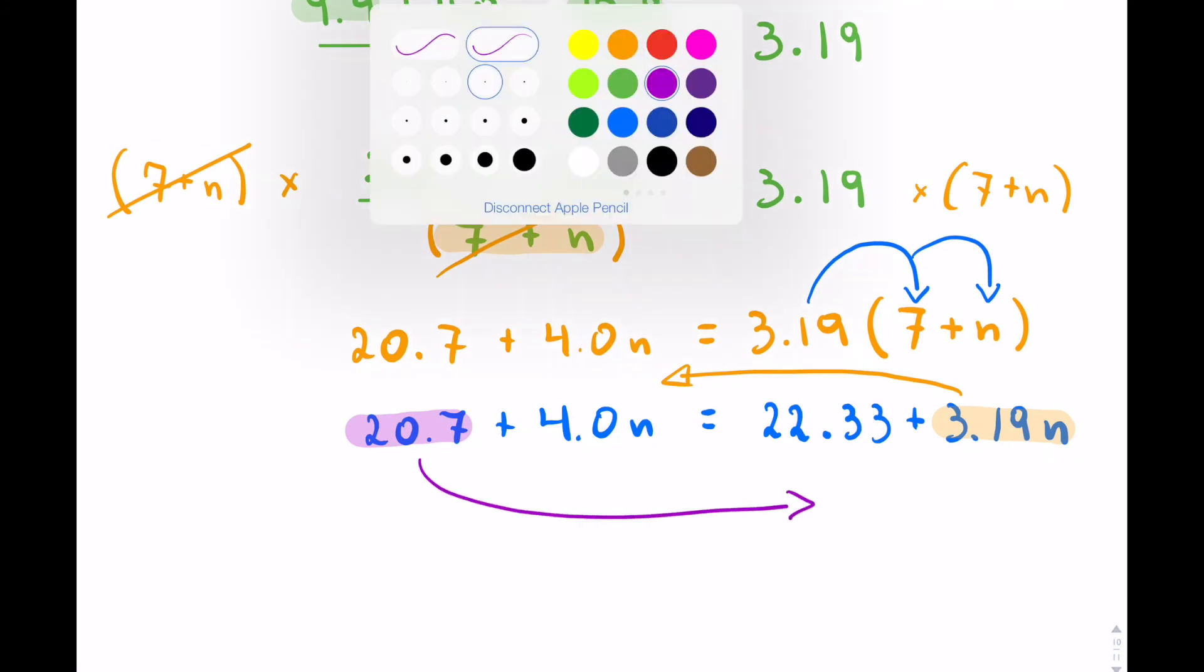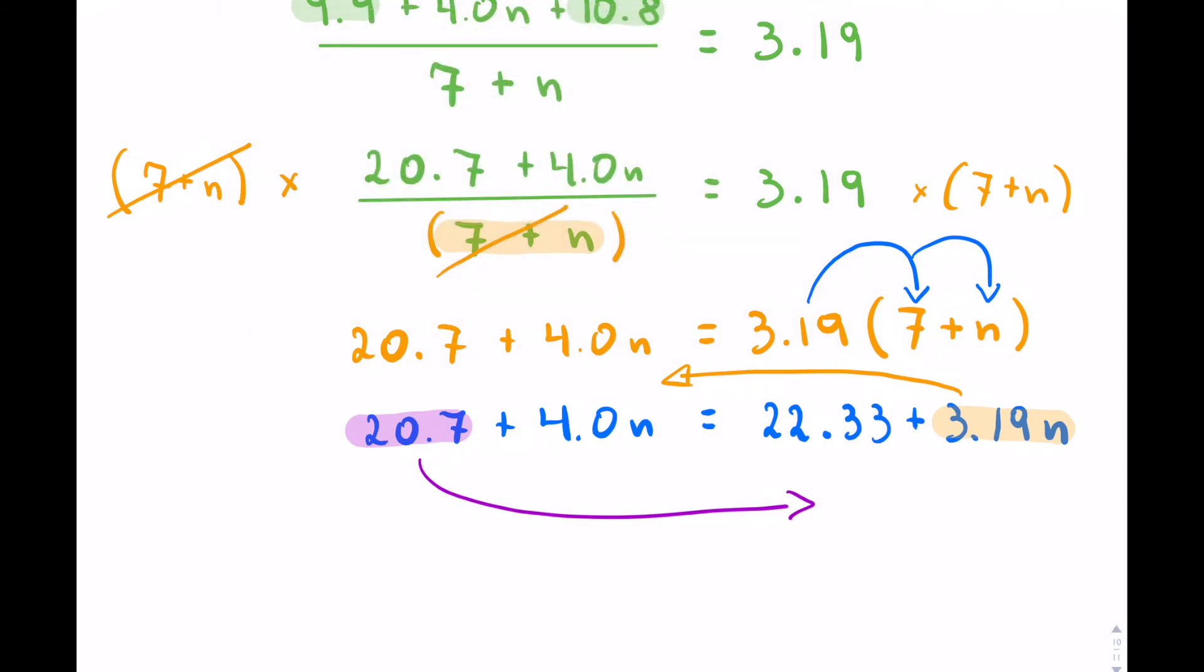This will give me 4.0n minus 3.19n, and then on the right-hand side 22.33 minus 20.7. Let's do the subtractions. We will have 0.81n, and 22.33 minus 20.7 is 1.63.